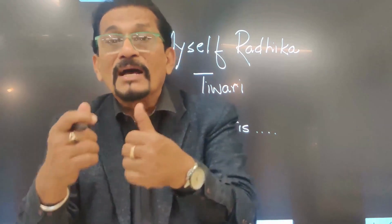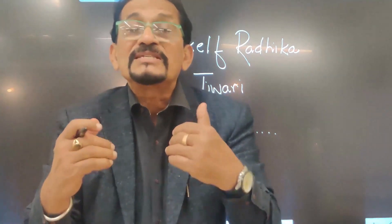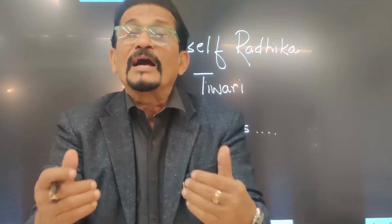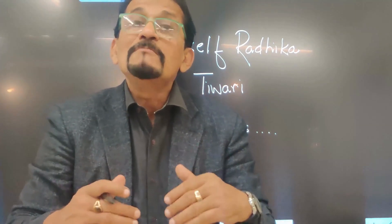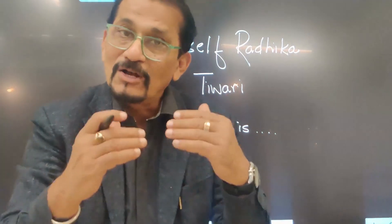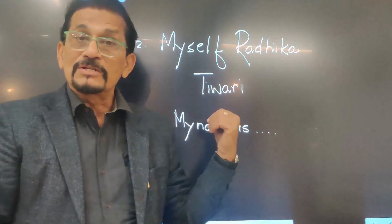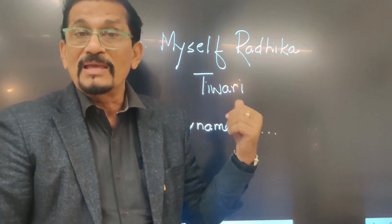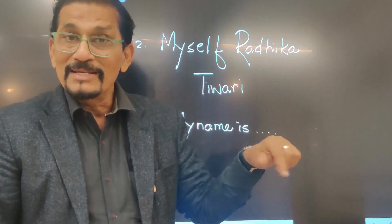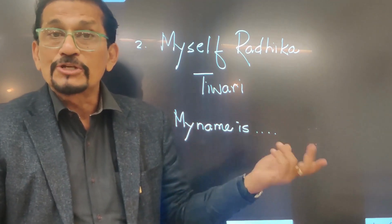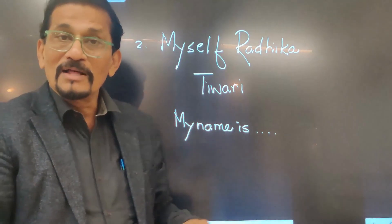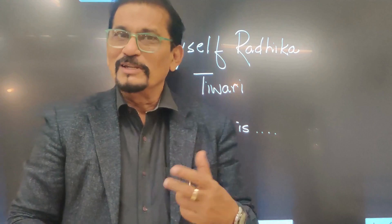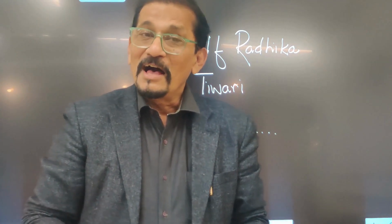The second usage — 'I myself did this' — is emphatic. If you tell somebody 'I did this' and they don't believe you, you say 'I myself did this.' Coming back to the original sentence, when Radhika Tiwari says 'Myself, Radhika Tiwari,' you realize it's totally incorrect. What should you say? Simply say 'My name is Radhika Tiwari,' or if you prefer, 'I am Radhika Tiwari.'